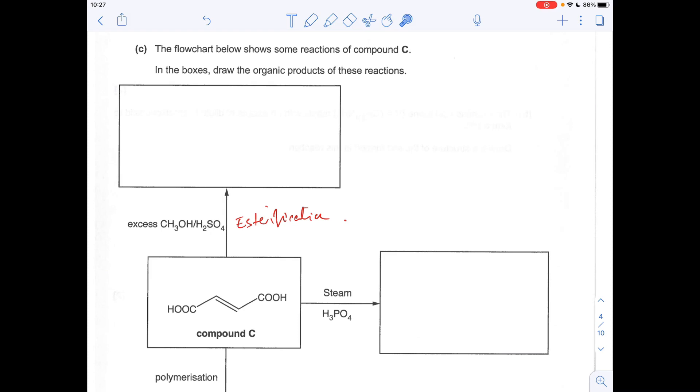Moving on to the flow chart now. So compound C, when it reacts with excess methanol, so alcohol and sulfuric acid, we're going to get an esterification reaction. So basically these groups here, these carboxylic acid groups, are going to turn into ester groups. So the ester will look like that.